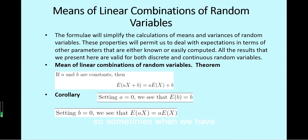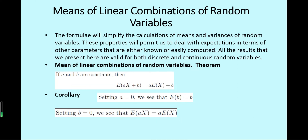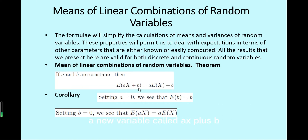Sometimes when we have a linear combination of a random variable, we only know the distribution of this random variable, but we can infer the distribution of the linear combination. For example, if a and b are constants, we can create a new variable ax plus b, where we know the distribution of x — x can be a discrete or continuous variable.